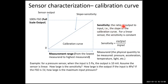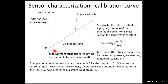From the calibration curve, sensitivity can be defined as the ratio of output to input — sensitivity equals output divided by input — namely the slope of the calibration curve. For a linear sensor, sensitivity is constant.